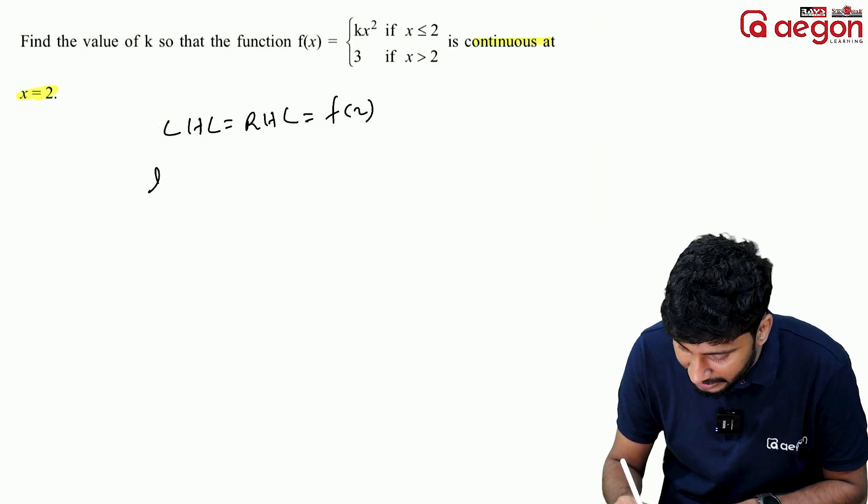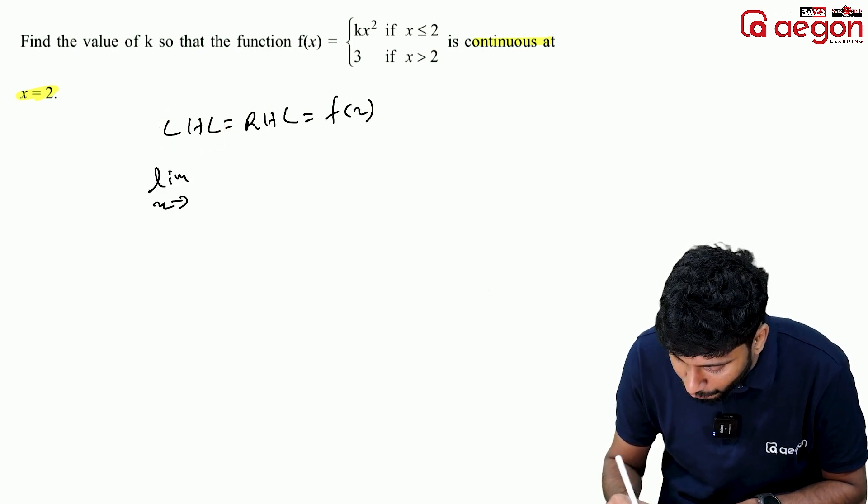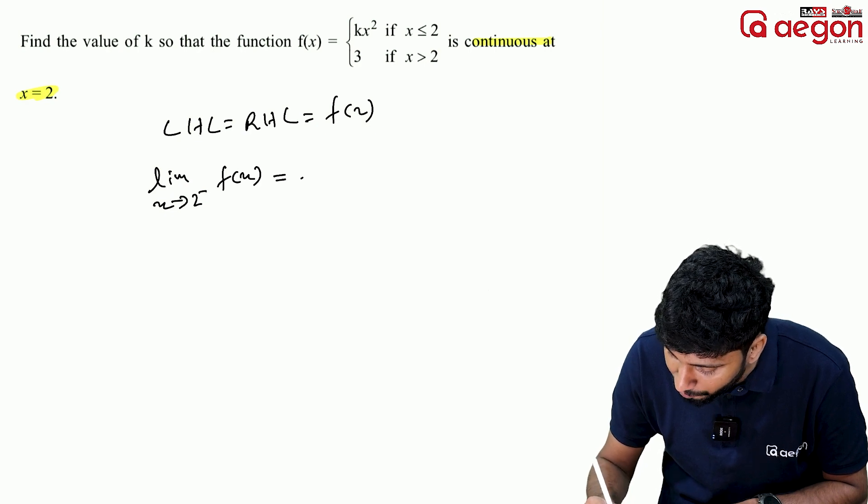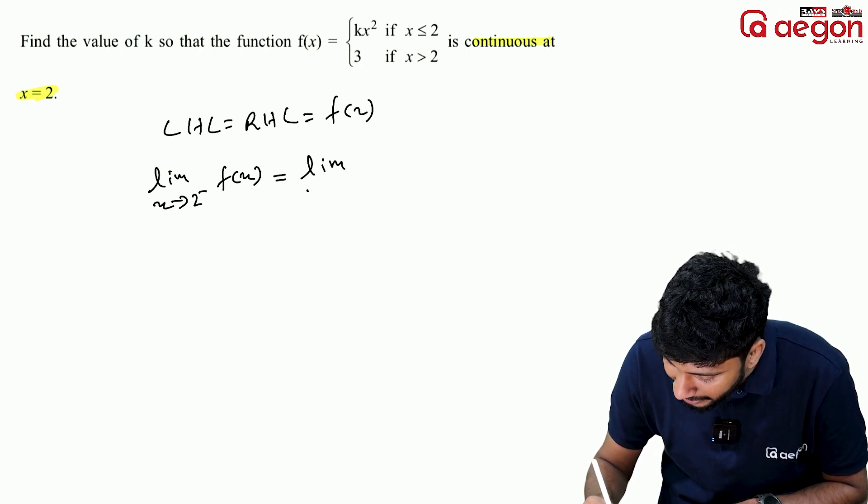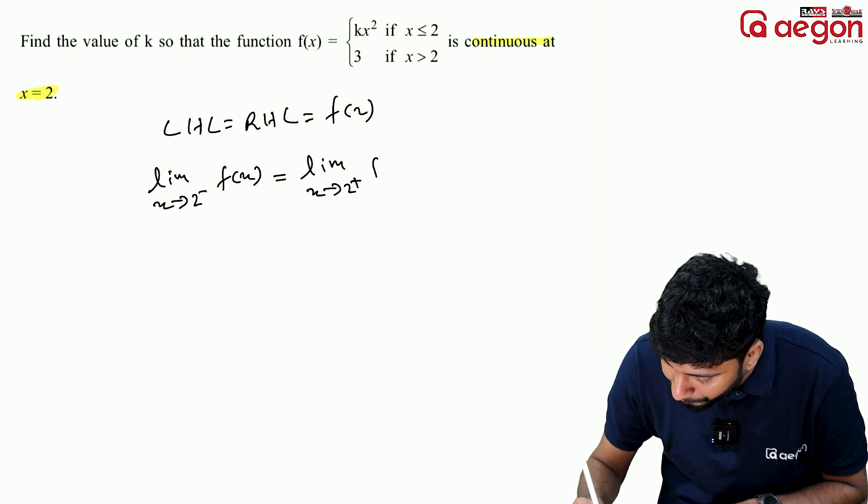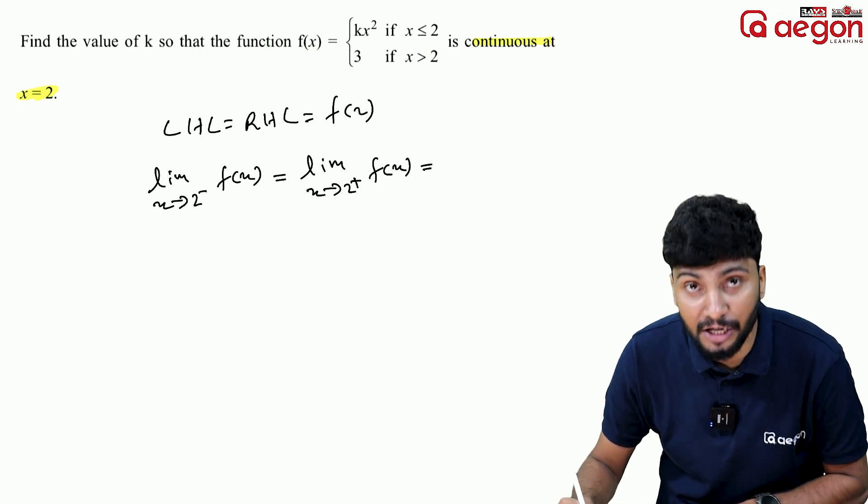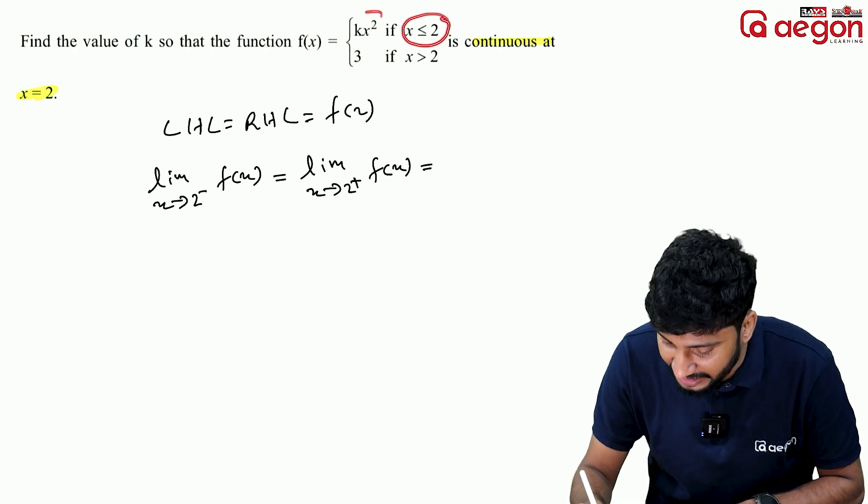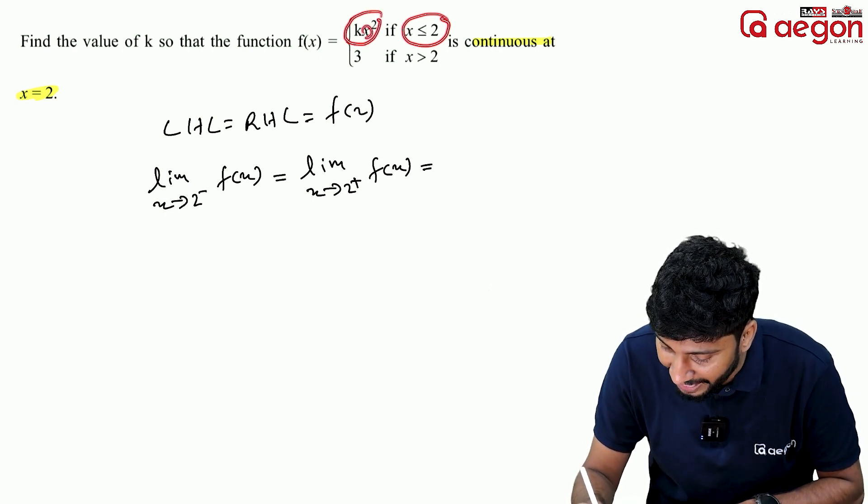Left hand limit means limit x tends to 2 minus f of x, that is equal to RHL, the right hand limit, which is limit x tends to 2 plus f of x, that is equal to f of 2.